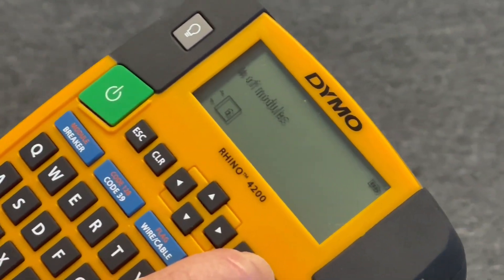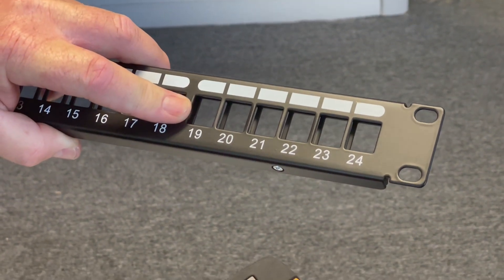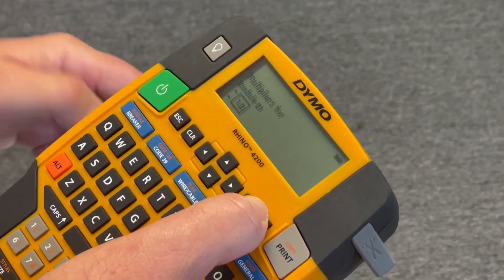The number of modulars are how many bays are on these. So typically we're using six bays. So we're going to hit okay on that.